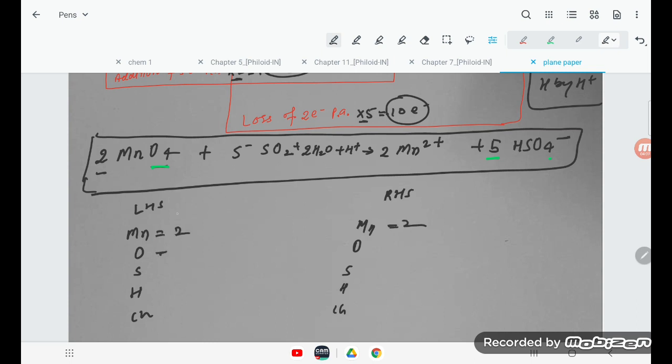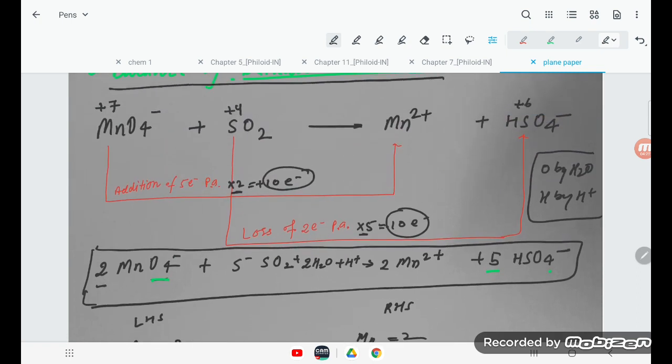Oxygen, how many are there? 4 times 8, 8, 10, 18 to 20. This is 20. This side how many are there? 20. Sulfur? 5. This side sulfur 5. Hydrogen, how many are there? 5. This side 5.